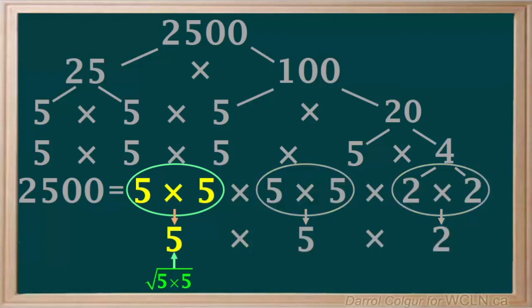Now this single 5 is the square root of the product 5 times 5. And this single 5 is also the square root of the product 5 times 5. And this single 2 is the square root of the product 2 times 2. So we can say that these three numbers multiplied together is the square root of 2500.